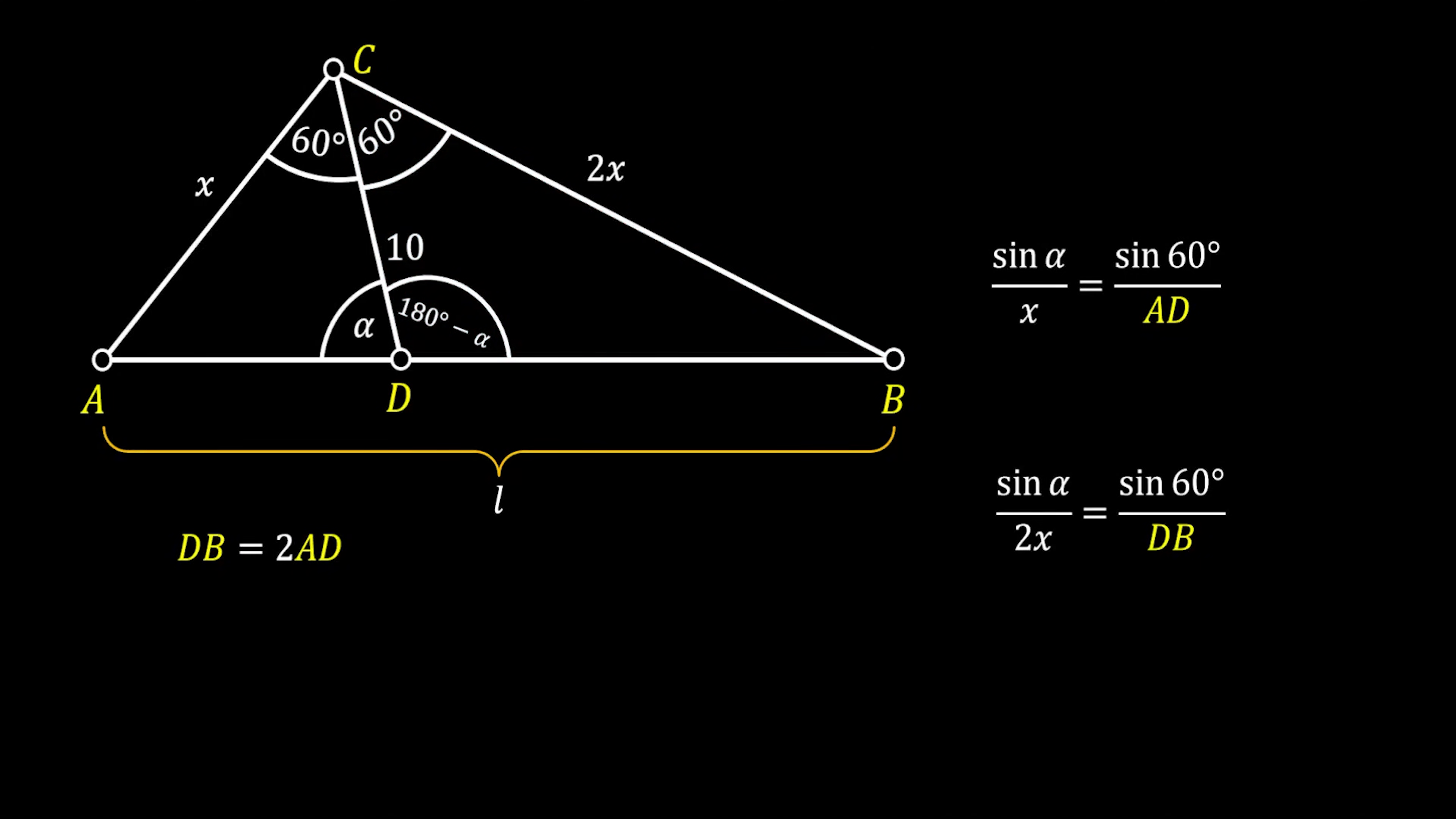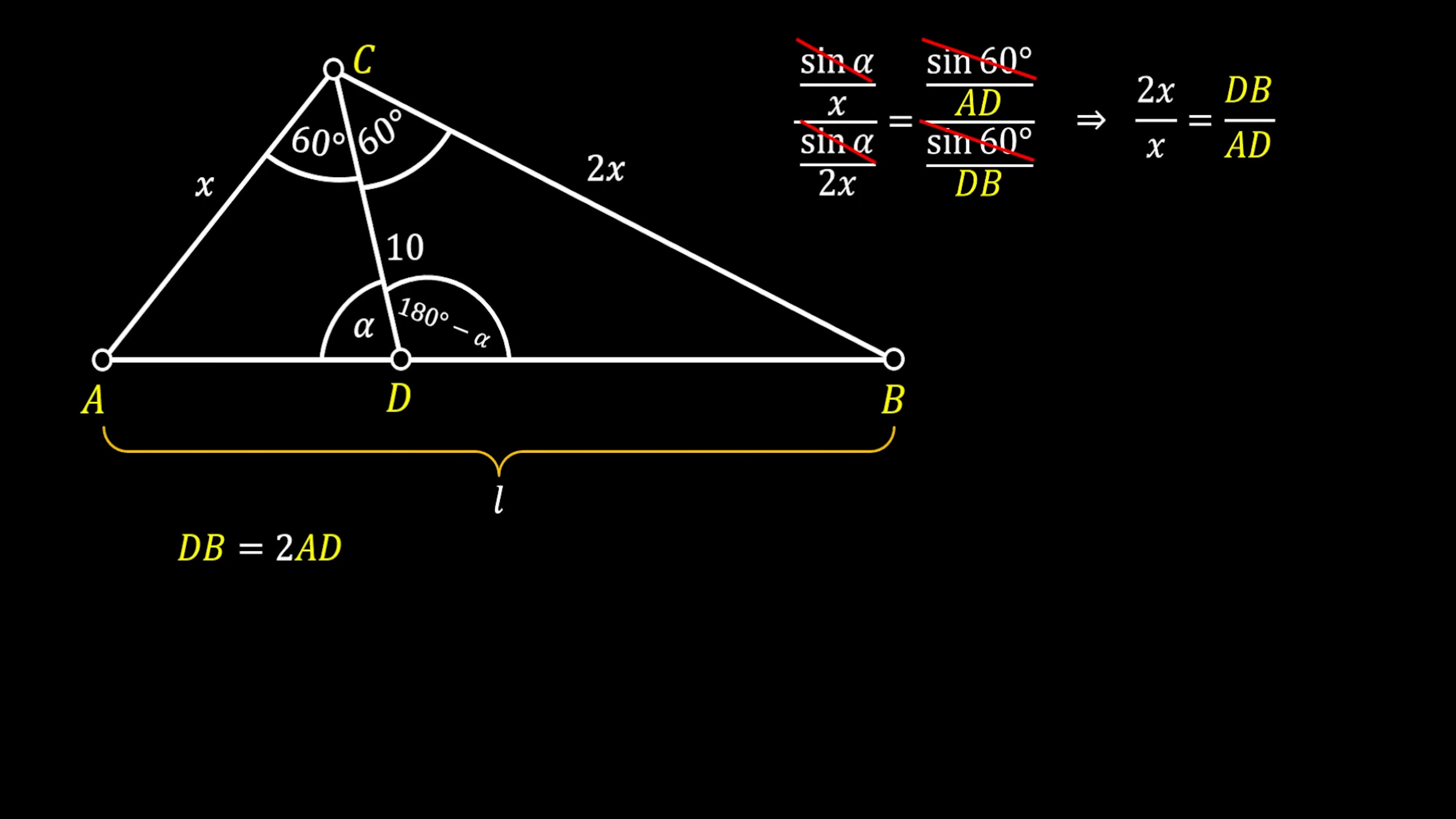So now we can use those two equalities. Remember, we are looking for the relation between the side DB and AD. So in order to get that, we are just going to divide those two relations. And if we do this, you can see that we can easily cancel sine alpha and sine of 60 degrees. We can simplify everything with X, and get that 2 equals to DB over AD, which means that DB must be equal to 2 times AD.